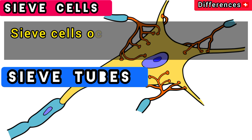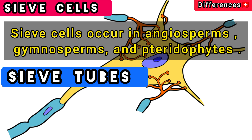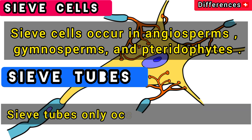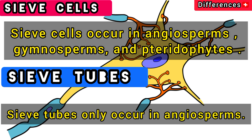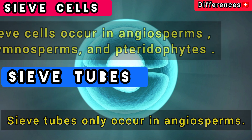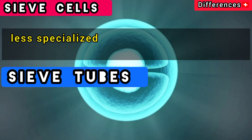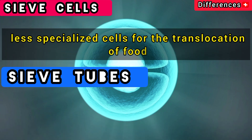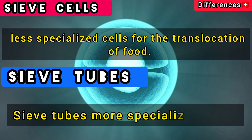Sieve cells occur in angiosperms, gymnosperms, and pteridophytes. Sieve tubes only occur in angiosperms. Sieve cells are less specialized cells for the translocation of food, while sieve tubes are more specialized cells.